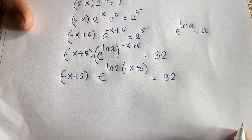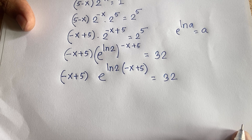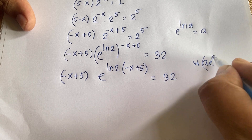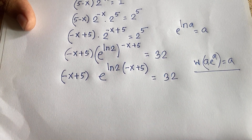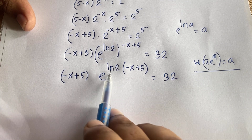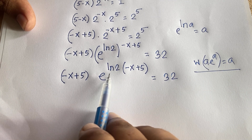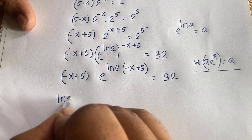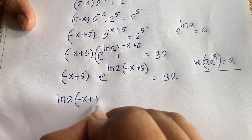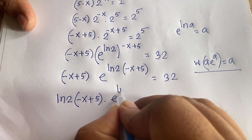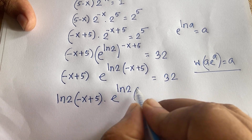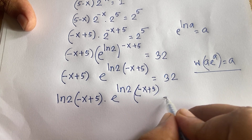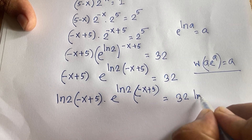Now I use the Lambert W function: W of (a · e^a) equals a. Here there is an extra ln 2 factor, so I multiply both sides by ln 2. This gives us: ln 2 times (minus x plus 5) times e to the power of ln 2 times (minus x plus 5) is equal to 32 times ln 2.